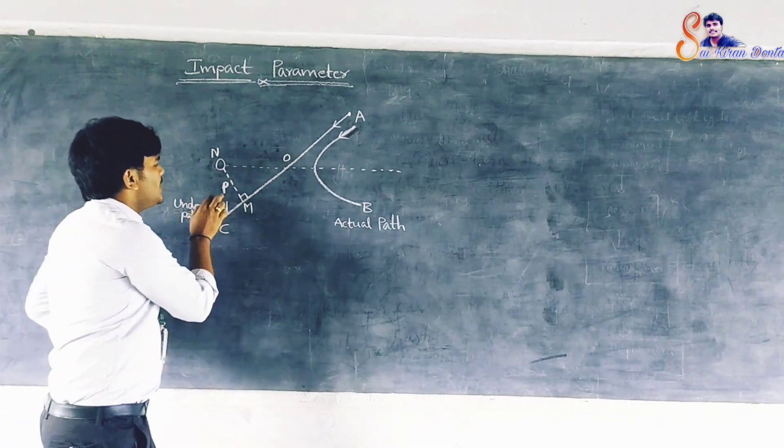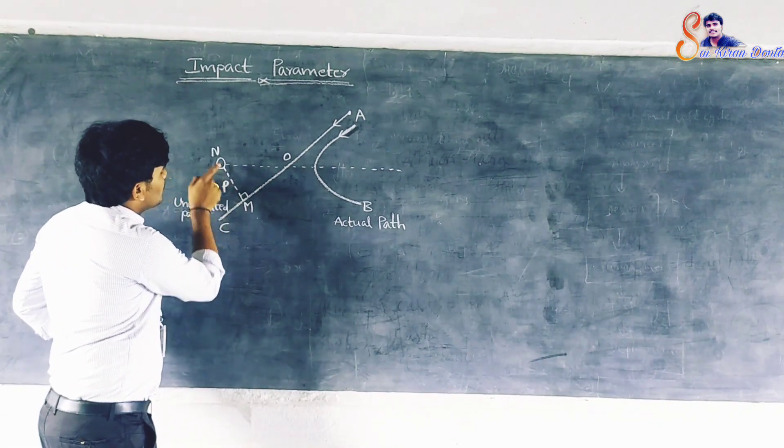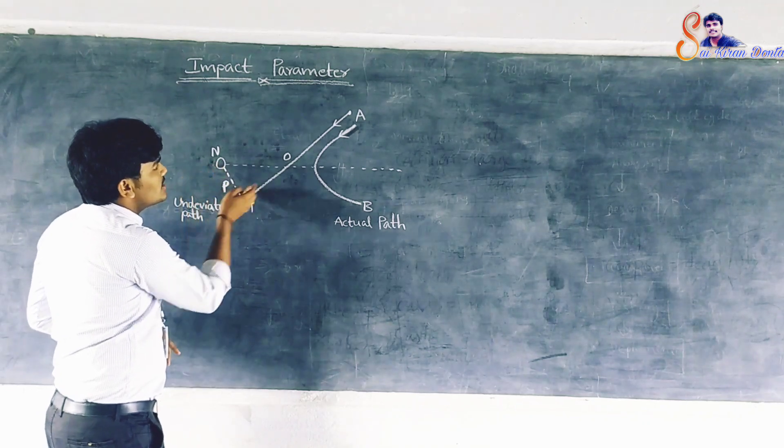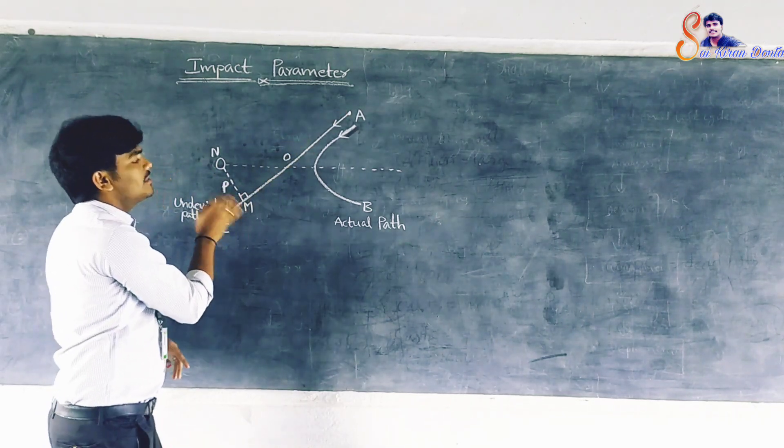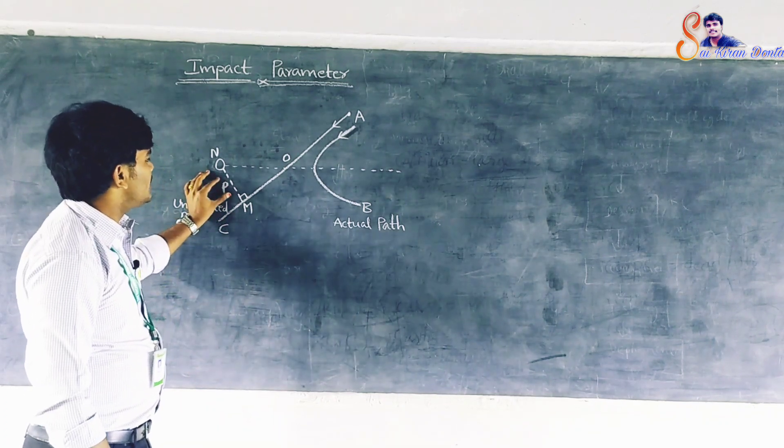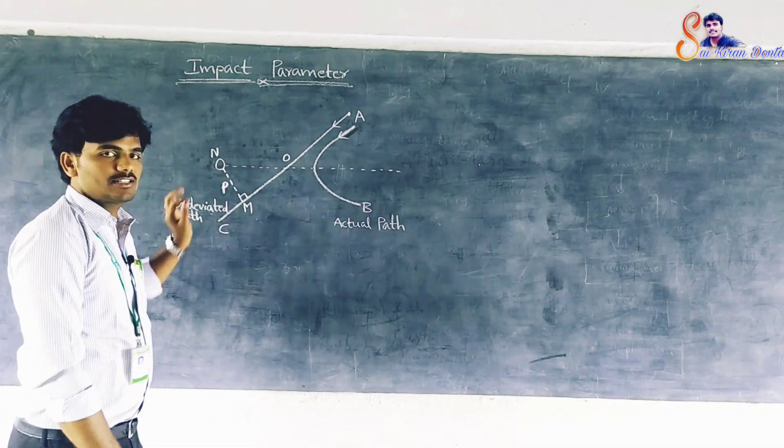As shown in the figure, P is the perpendicular distance from the nucleus N to the original direction AC of the particle. Ikada P ane the perpendicular distance ga manam draa ches kundam.